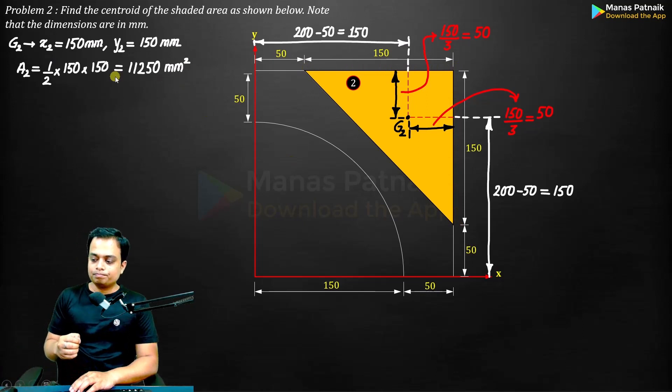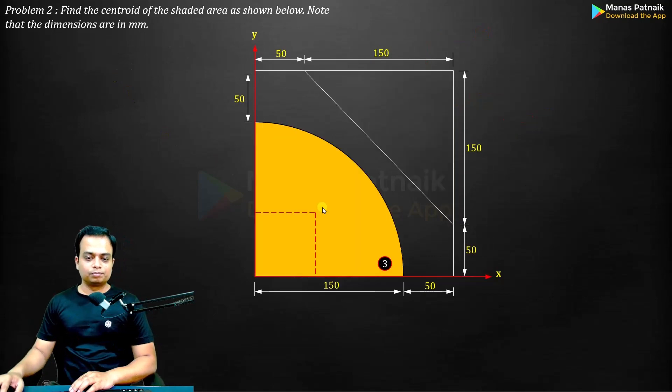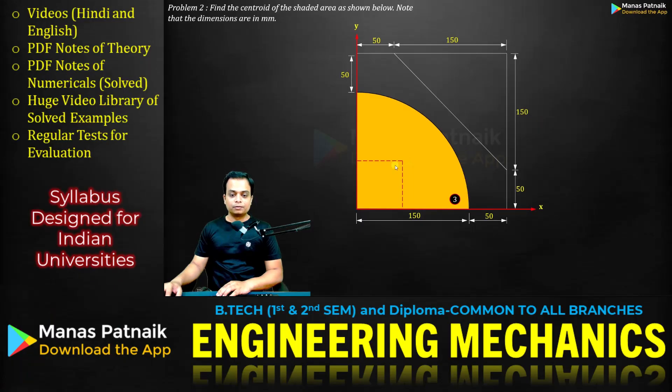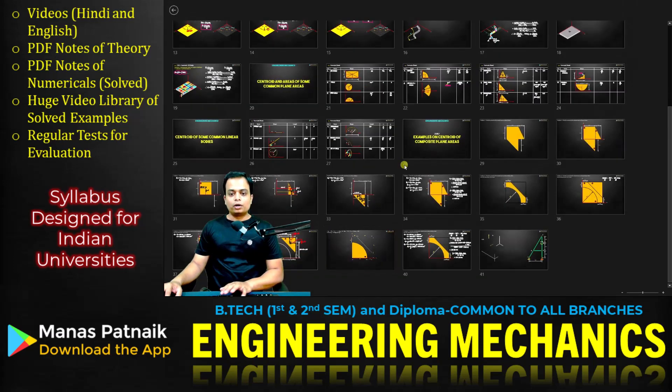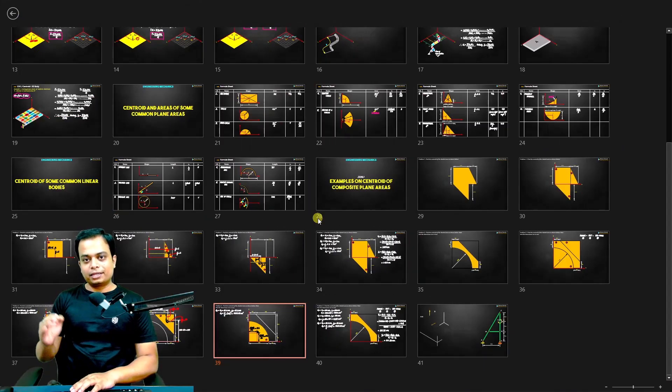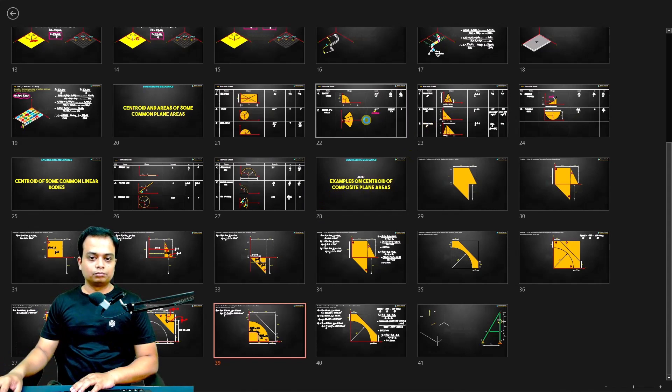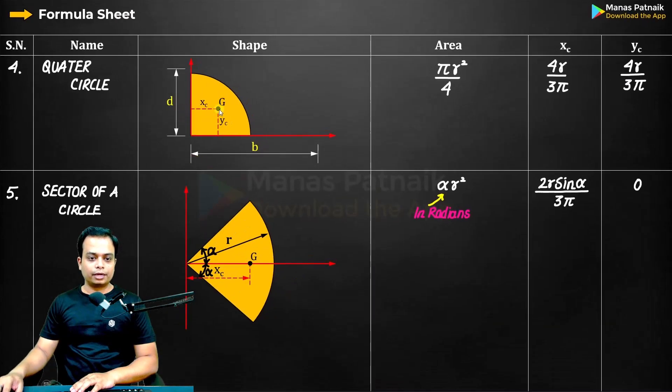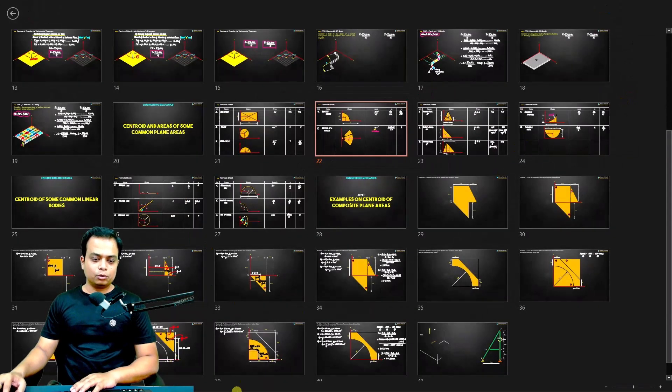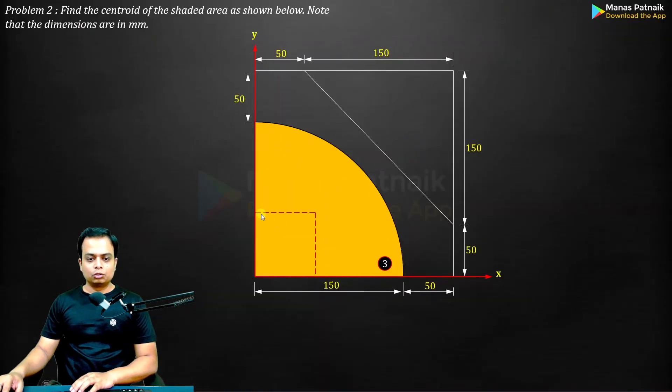Next is quarter circle. So what about it? This is g₃, by the way—g₃ centroid, centroid 3. For quarter circle, we know that the centroid is at 4r/3π, 4r/3π, both x and y. Let me show this. Here it is: x_c, y_c: 4r/3π, 4r/3π. Done.